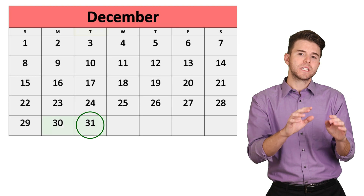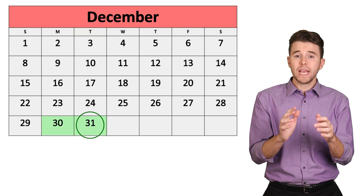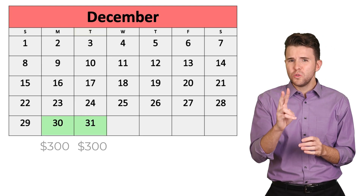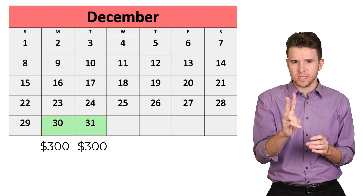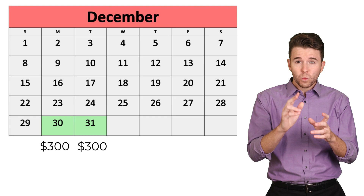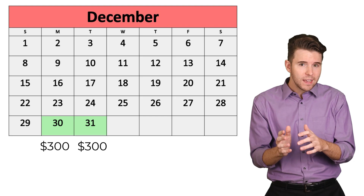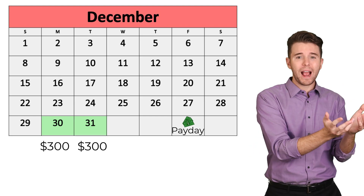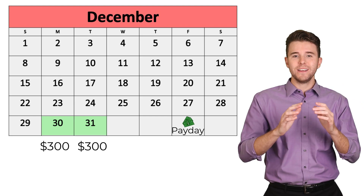So by Tuesday, the employee has earned two days of wages, but will not be paid until Friday of next year.